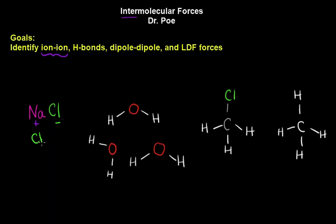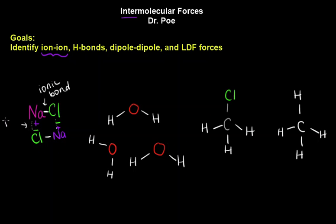These different molecules line up. We see the bond right here between Na and Cl, and it can line up any which way so that the positive from Na lines up with the negative from the Cl — that's our ion-ion intermolecular force. We typically draw these with dotted lines because they're not as strong as the actual intramolecular bonds within.